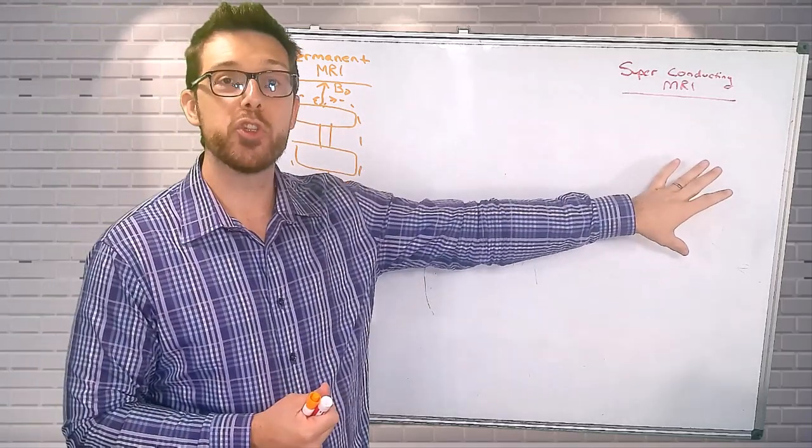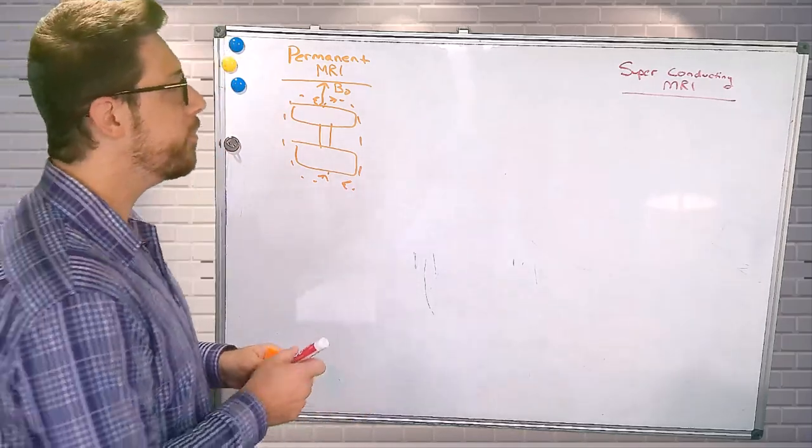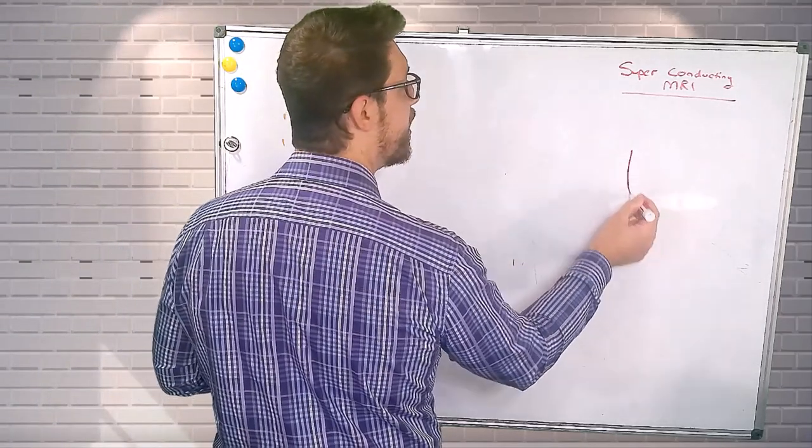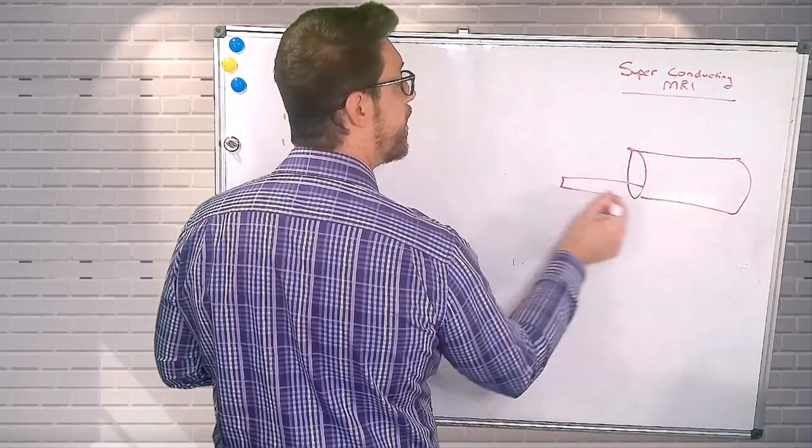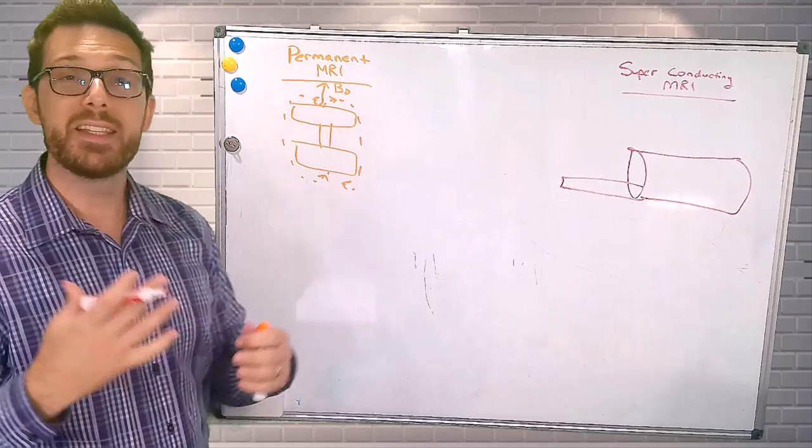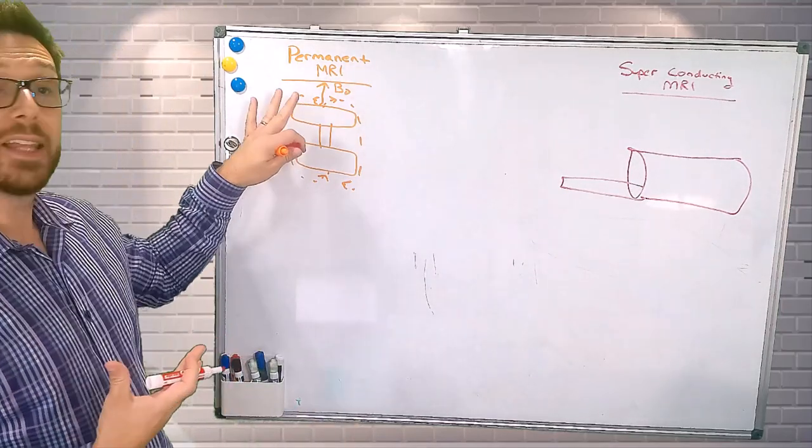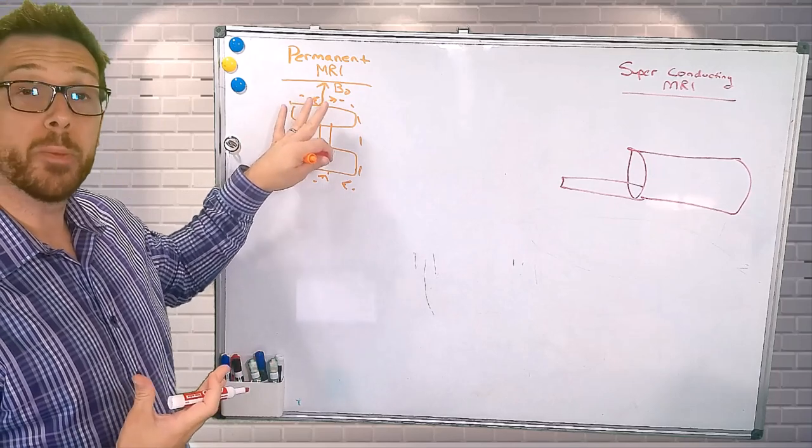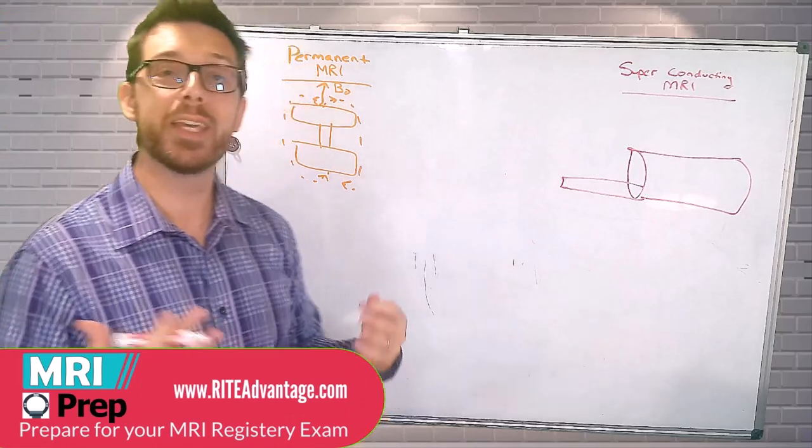On the contrary, we have superconducting MR units. These are typically larger units. We can picture this as a unit that will have a different B0. We're going to create this magnetic field differently. Where our B0 is created with permanent magnets in a permanent MR unit, in a superconducting MR unit, we're using a solenoid.